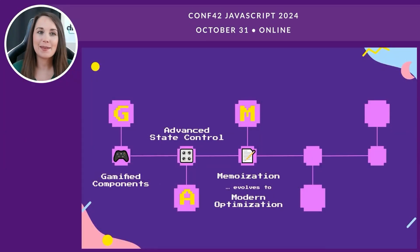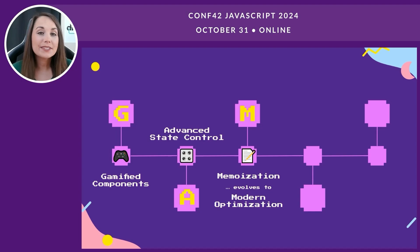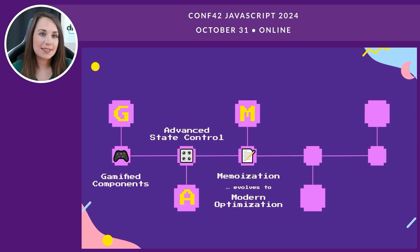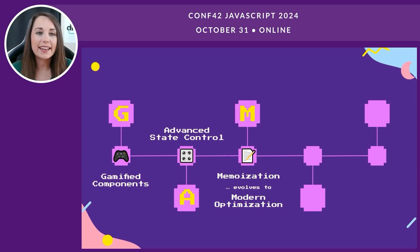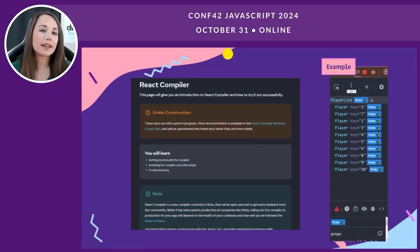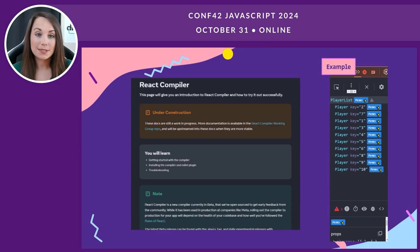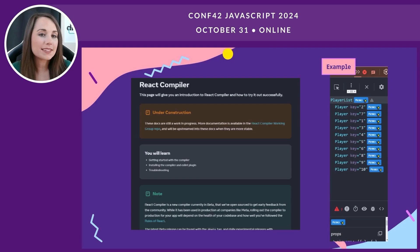The M in GAMES stands for memoization, which is really the key to ensuring our apps run smoothly. Memoization helps us prevent unnecessary re-renders, improving performance — especially in dynamic applications. Looking ahead, this is where modern optimization comes into play. The new React compiler, which is currently in beta, will take this further by automatically optimizing our apps without the need for manual memoization — it will analyze component trees and apply performance improvements seamlessly.